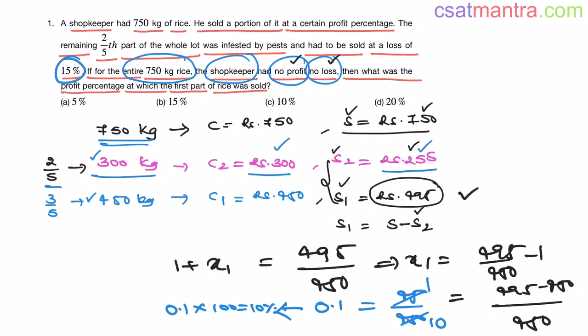0.1 into 100. This is 10 percentage. See 15 percentage. We wrote it as 0.15, right? To convert it into percentage, we have to multiply it with 100. Similarly, here 0.1. To convert it into percentage, we have to multiply it with 100. That is 10 percent. So, our answer is C.